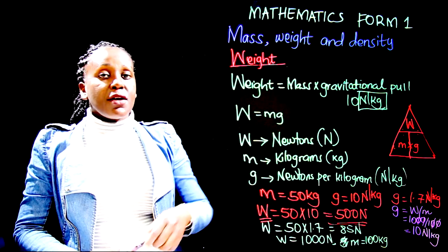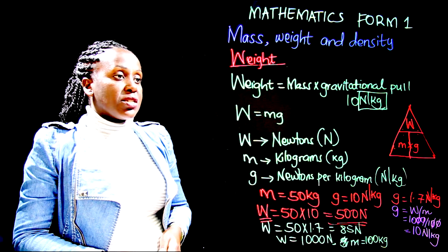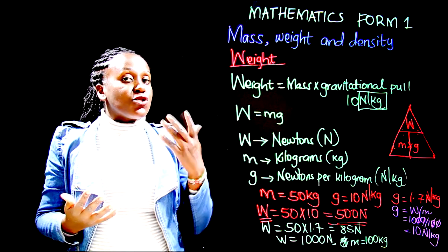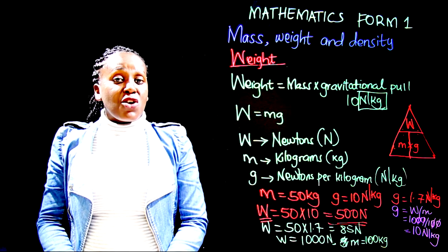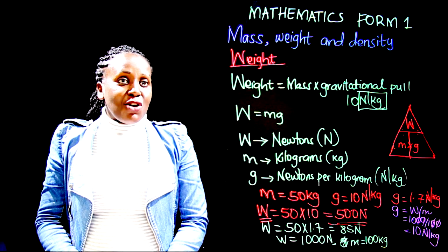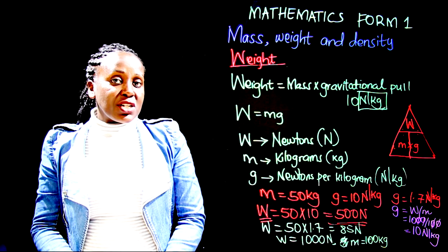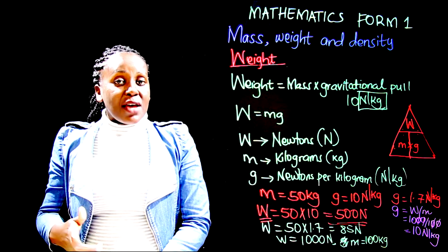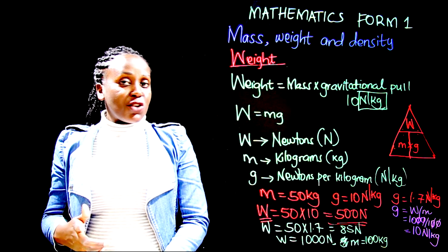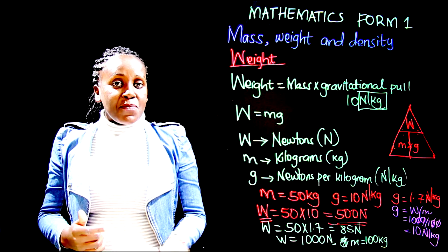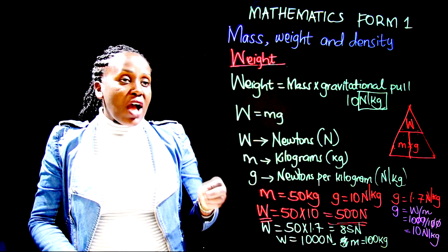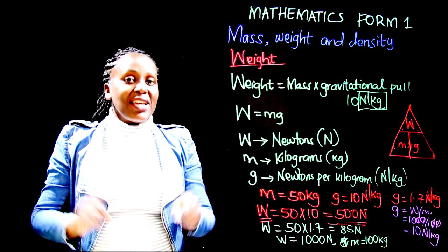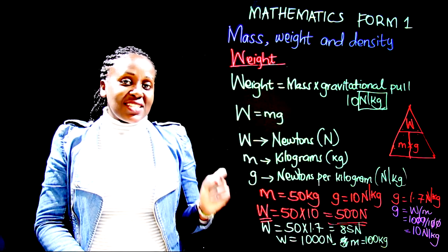We can clearly see that mass is related to weight but they are not the same thing. You cannot say you weigh 40 kilograms — that would be a misrepresentation. If your mass is 40 kilograms, you multiply 40 by 10 to say that you weigh 400 newtons. Do not use the two interchangeably — each means something different, though they are related.